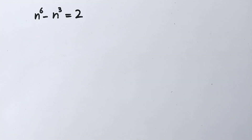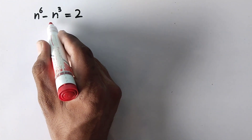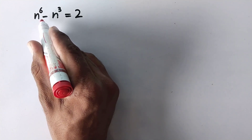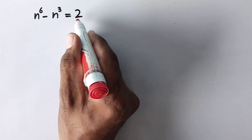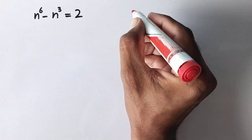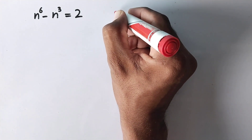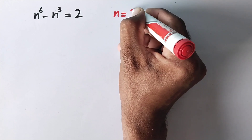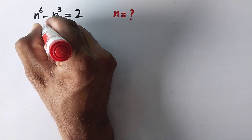Hi everyone. Welcome to Explode Maths. Today we have to solve the question: n raised to the power 6 minus n raised to the power 3 is equal to 2. We have to find all possible roots of n. Let us see the solution.